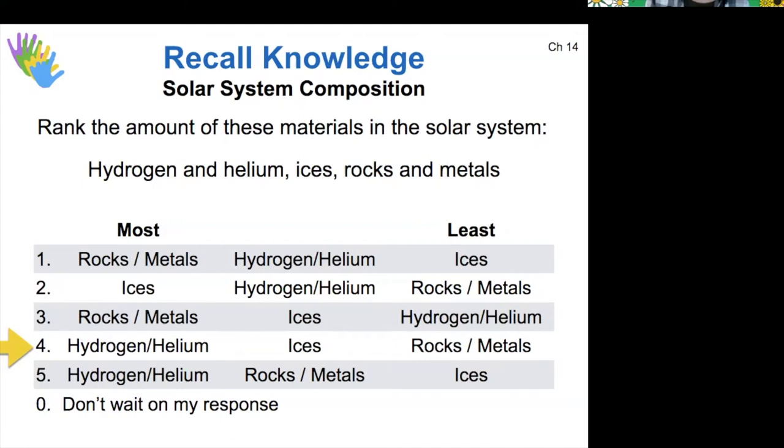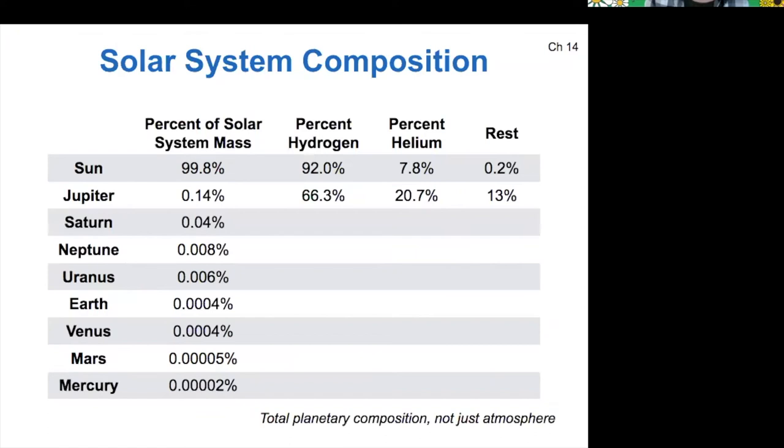So when we look at the solar system composition in terms of individual objects, most of the solar system's mass is contained within the sun, 99.8% of the solar system's mass. And the sun is 92% hydrogen, 7.8% helium, and trace amounts of everything else. So that means that the vast majority of all the mass in the solar system is tied up in the sun as hydrogen and helium.